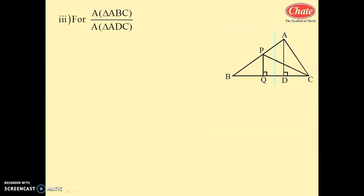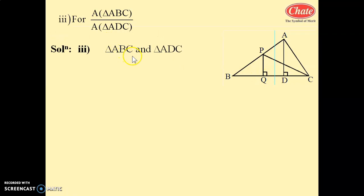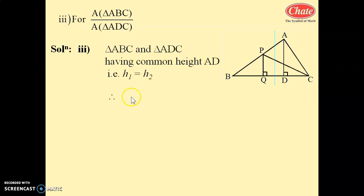Third: area of triangle ADC upon area of triangle ABC. These two triangles have height AD in common. Their bases are DC and BC respectively, so the ratio of their areas equals DC upon BC, i.e., h1 based on respective bases.